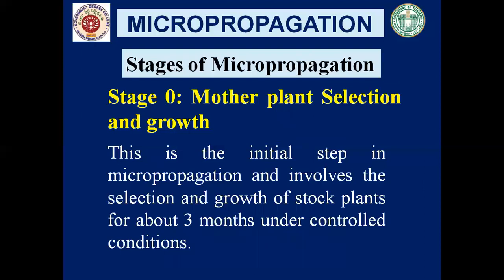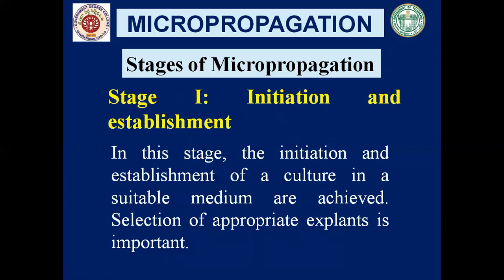Stage 0 — mother plant selection and growth. This is the initial step in micropropagation and it involves the selection and growth of stock plants for about three months under controlled conditions. We have to select a plant from which we want to produce many plantlets, take an explant from the selected plant, and make it grow on a nutrient medium in aseptic conditions in a growth chamber.